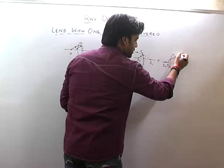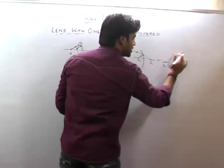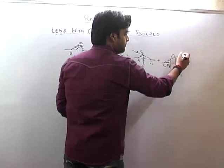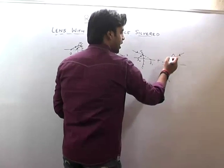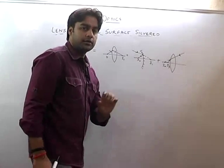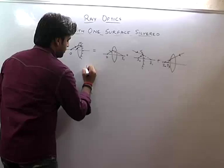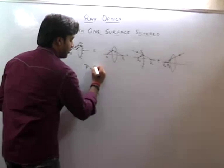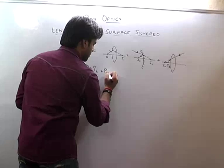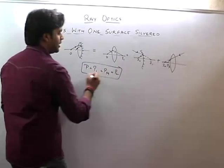The rays from I1 were going through, but since there is a lens, the rays refract again and form a final image at I3. The net power is given by: P = P_L + P_M + P_L — power of the lens, plus power of the mirror, plus power of the lens again.